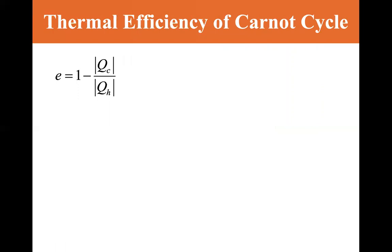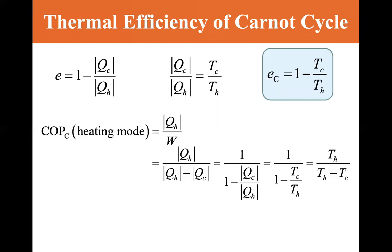And now the thermal efficiency of the Carnot cycle is E equals one minus the absolute value of Q-cold over the absolute value of Q-hot. Q-cold is equal to T-cold, and Q-hot is equal to T-hot. So the efficiency of the Carnot engine is equal to one minus T-cold divided by T-hot. And the coefficient of performance in the heating mode is Q-hot divided by work, and it all ends up as T-hot divided by T-hot minus T-cold.